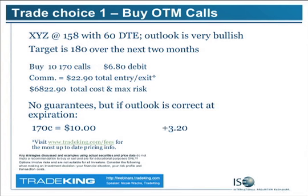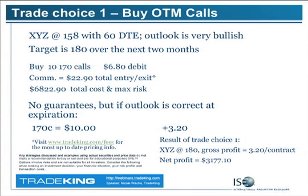I realize most underlying currencies are not going to move from 158 to 180 in two months. So let's take a look at the math. Let's say you think the stock or the underlying can go up significantly in the next two months — move from 158 to 180. One thing you can do is buy 10 out-of-the-money calls, the 170 calls, for a $6.80 debit. That would cost you approximately $7,000 including commissions. If you are correct, at expiration those 170 calls would become worth $10, giving you a net profit of $320, which would be a nice profit of about $3,000.